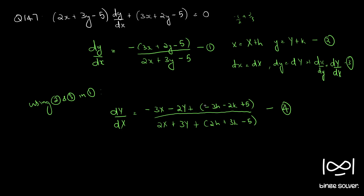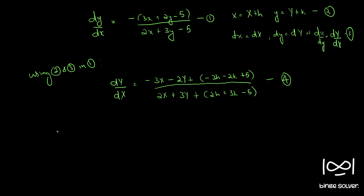Equation 4 is not homogeneous. But if we choose H and K such that minus 3H minus 2K plus 5 equals 0, and 2H plus 3K minus 5 equals 0, then equation 4 reduces to a homogeneous form. So we find H and K satisfying these two equations.